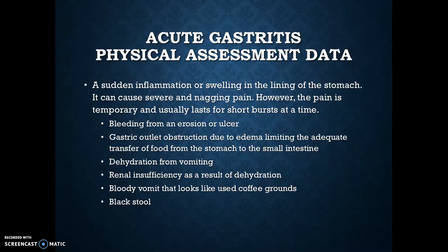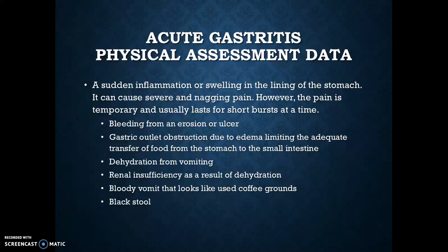As discussed earlier, acute gastritis is sudden, with short bursts lasting only a short amount of time. The physical assessment for acute gastritis could reveal bleeding from an erosion or ulcer, gastric outlet obstruction due to edema limiting the transfer of food from the stomach to the small intestines, dehydration from vomiting, renal insufficiency as a result of dehydration, and bloody vomit that looks like used coffee grounds or black stool.